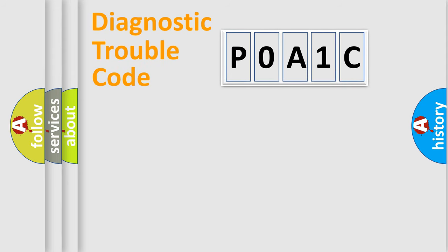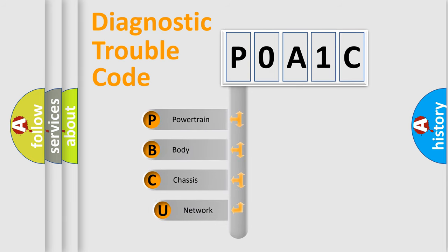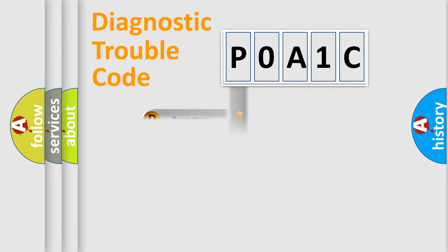First, let's look at the history of diagnostic fault code composition according to the OBD2 protocol, which is unified for all automakers since 2000. We divide the electric system of automobile into four basic units: Powertrain, Body, Chassis, Network. This distribution is defined in the first character code.